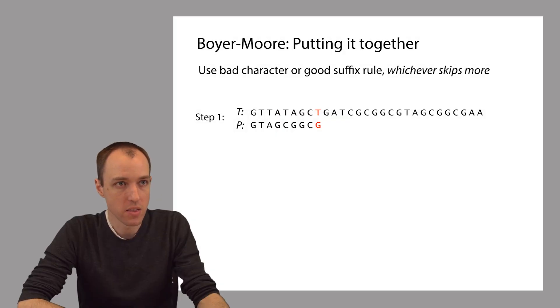So let's use them both in an example. Let's say that this here is our first alignment of P to T. The very first character comparison is going to result in a mismatch. This G in the pattern mismatches this T in the text.